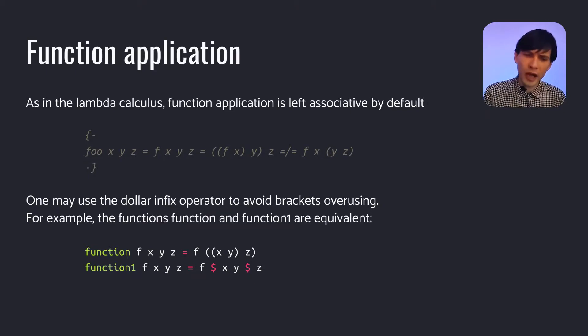For example, we have the function called foo. This is a three-argument function. The arguments are x, y, z. And foo is defined with another function called f, where f is some function. And we have f, x, y, z with no brackets. But with brackets, that's the same as application of f to x. After that, we apply the result of the application to y. And finally, we apply f, x, y to z.